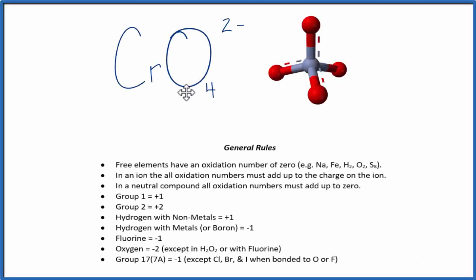In this video, we'll find the oxidation numbers for CrO₄²⁻, that's the chromate ion. We'll use these general rules here to help us find the oxidation number, and we're mainly interested in the chromate here.